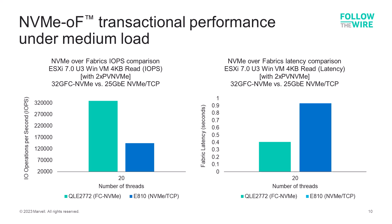NVMe over TCP, on the other hand, relies on server CPU and memory resources for IO processing and can't quite deliver the same level of IOPS performance as fiber channel. And from a latency perspective, the same is true — fiber channel with full offloads delivers lower latency, which in this case is better, than NVMe over TCP.